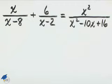We need to multiply both sides of this equation by the least common denominator in order to get rid of these denominators.